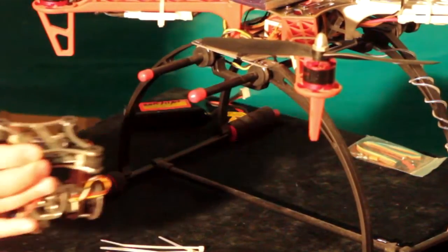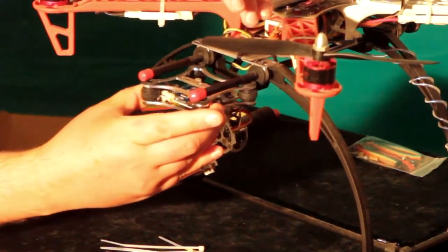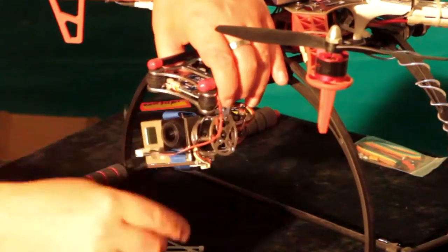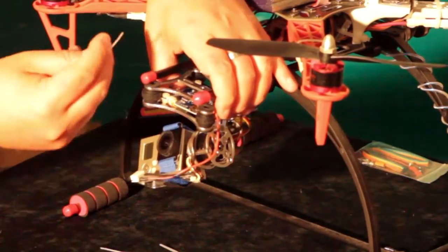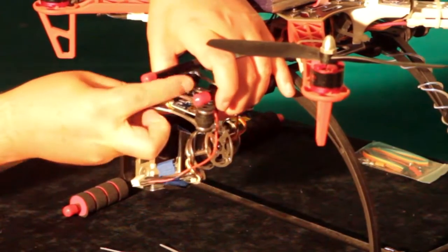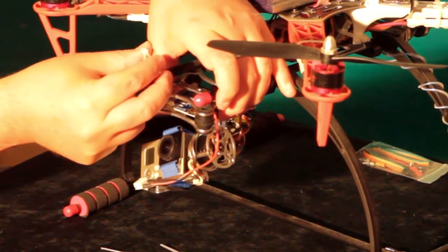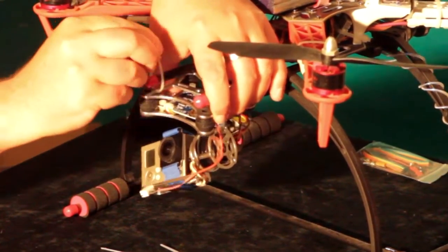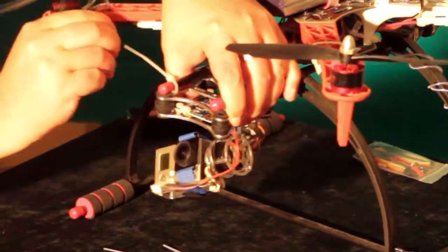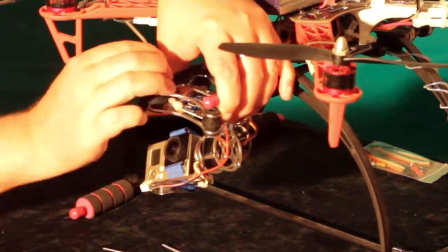I'm going to mount the gimbal just on the front camera mount here that comes with the landing gear. Just use some cable ties. I'm not going to screw the gimbal to the frame or anything like that. Just four cable ties and we should be good to go.